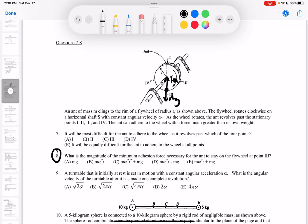It asks me what's the minimum magnitude of the adhesion force for the ant to stay on the flywheel at point III.